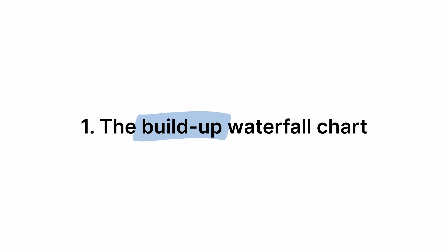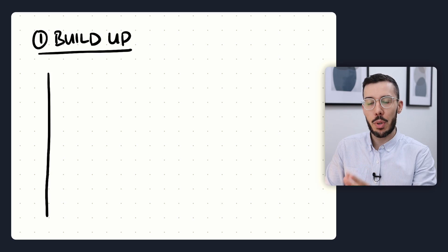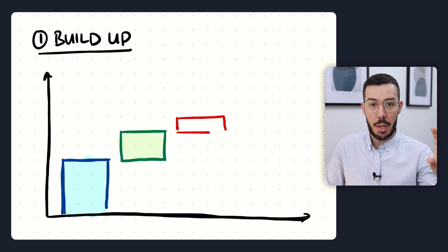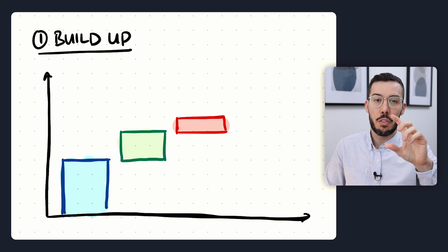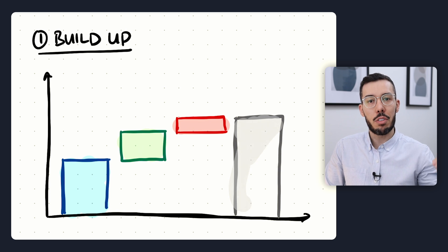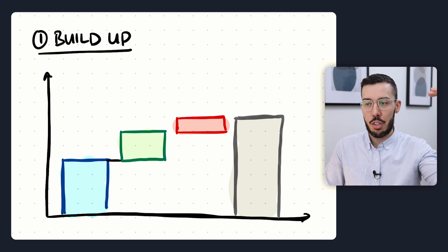The simplest type of waterfall chart you'll come across is called the build-up waterfall chart, and it's also the one you'll see most commonly. Essentially what you're doing is building up to a total — you start with part A, then move to part B, then part C, and so on, until you eventually reach the total.